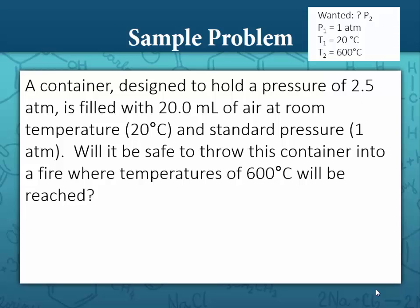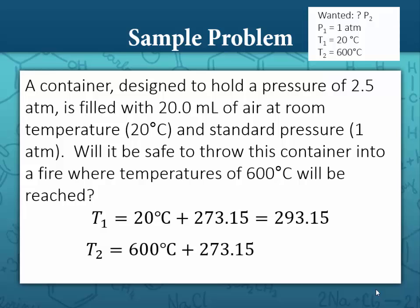First off, we're going to need to convert these temperatures to Kelvin, because we can only use Kelvin in gas law problems. So we have a T1 of 20 degrees Celsius and a T2 of 600 degrees Celsius. To solve for Kelvin, we add 273.15, and T1 becomes 293.15. And 600 degrees Celsius plus 273.15 becomes 873.15 Kelvin.